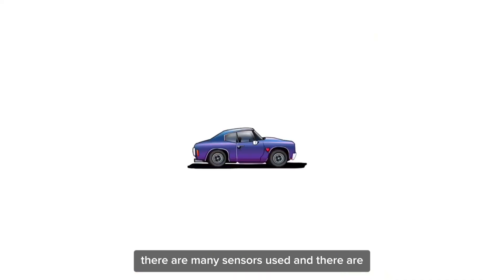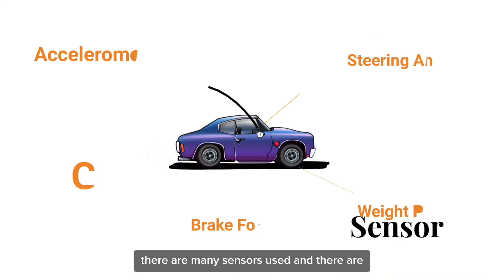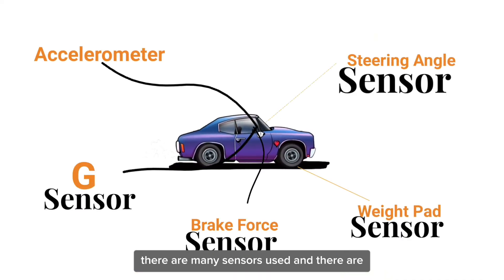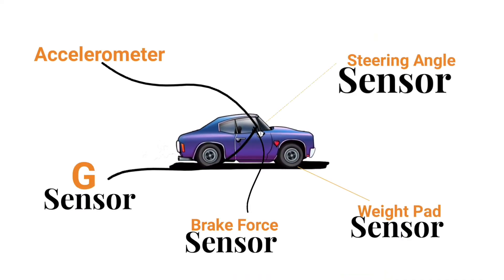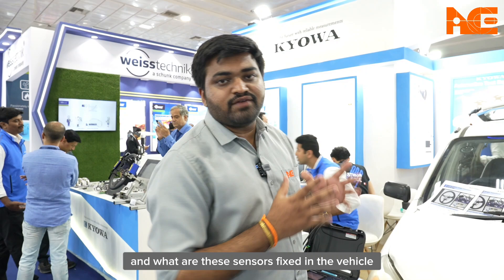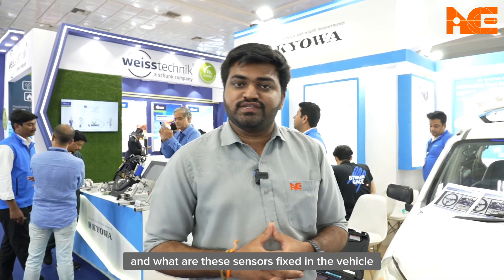As you've seen in the crash, to validate this crash there are many sensors used and they are fitted in certain locations. Let's explore their locations and what are the sensors fitted in the vehicle now.